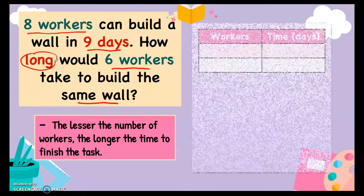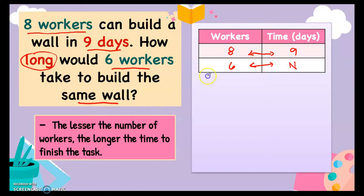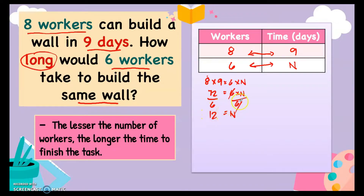To solve it, we make a table for easier identification. We have 8 workers for 9 days, and for 6 workers we need to find n days. If you decrease the number of workers, the time will be longer. For indirect proportion, we multiply with the same rows: 8 times 9 equals 6 times n. Eight times 9 is 72, so 6n equals 72. Dividing both sides by 6, n equals 12.